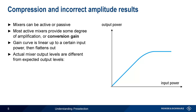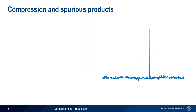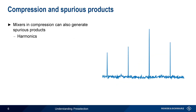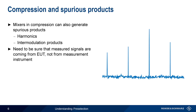The result is that the actual mixer output levels are different than the expected mixer output levels. In most cases this incorrect amplitude is lower than the expected levels, but can actually be higher in some cases, depending on the idiosyncrasies of a particular mixer's design. A mixer in compression can also generate distortion in the form of spurious products, such as harmonics and intermodulation products. In many applications, and especially in EMI measurements, these spurious signals are a significant issue. We want to be sure that the signals we are measuring are actually coming from the equipment under test, not from the measurement instrument itself.